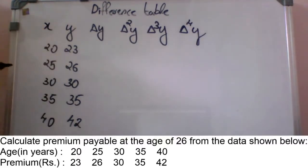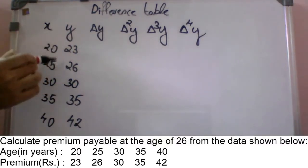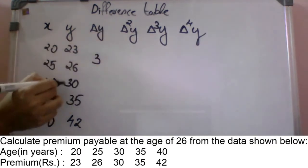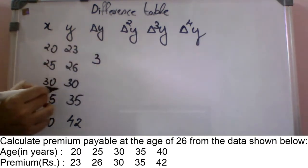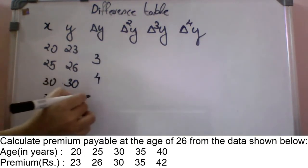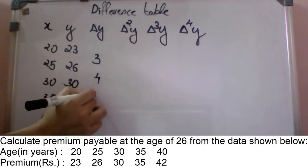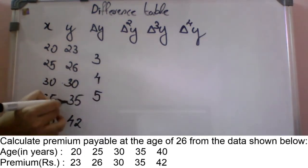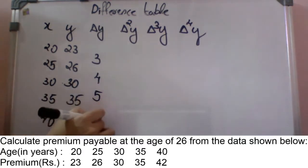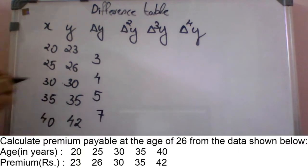For the delta y column, we compute the differences: 26 minus 23 is 3; 30 minus 26 is 4; 35 minus 30 is 5; and 42 minus 35 is 7. The delta y column is now complete.